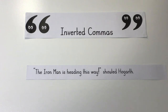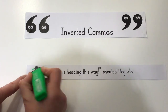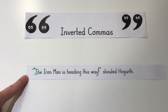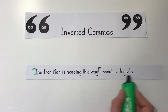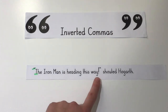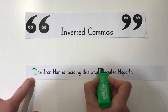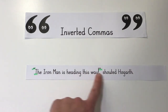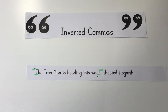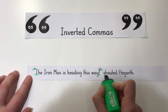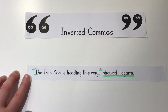This time our verb is 'shouted,' so Hogarth is shouting. Let's read it out loud: "The iron man is heading this way!" shouted Hogarth. We can hear that it's read very differently than when Hogarth whispered. We have our opening inverted commas, our capital letter to begin, and because Hogarth is shouting our punctuation has changed to an exclamation mark. Then our closing inverted commas end the speech, and the reporting clause — shouted Hogarth — tells us who was speaking and how.